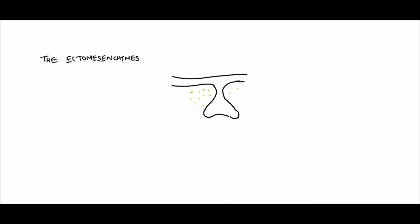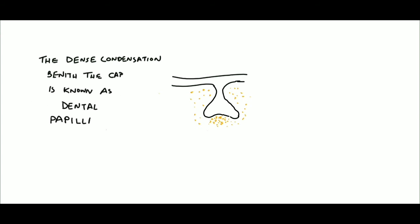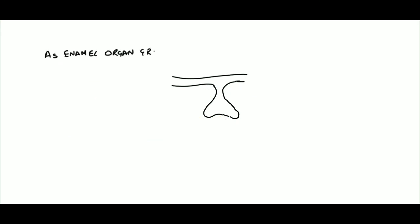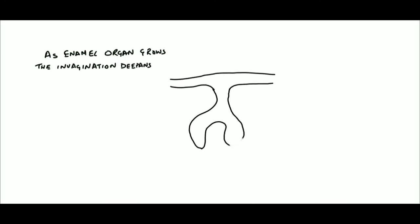The ectomesenchyme, which we can see here around, continues to accumulate near the invagination. The dense condensation beneath the cap is known as the dental papilla, which forms the dentin and pulp. The ectomesenchyme that surrounds the cap is known as the dental sac or dental follicle. As the enamel organ grows, the invagination deepens and forms a cervical loop at the tip.